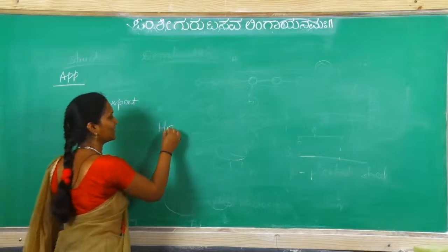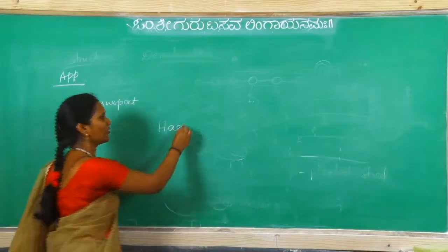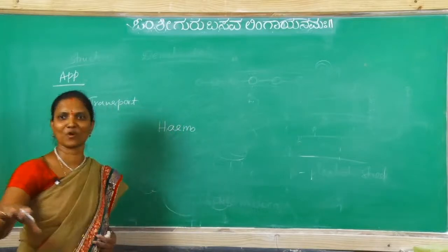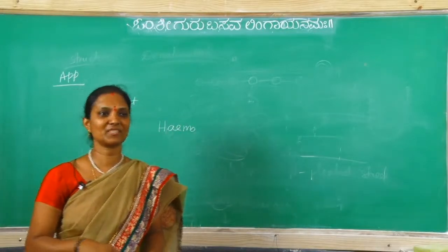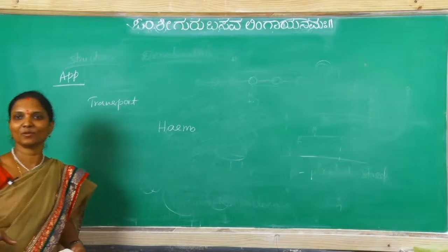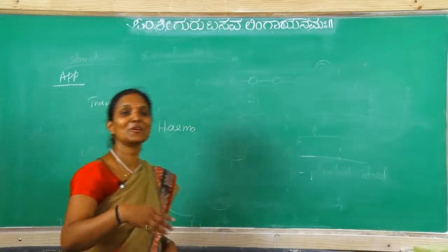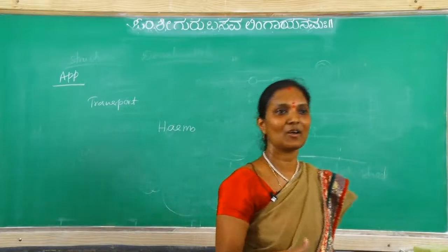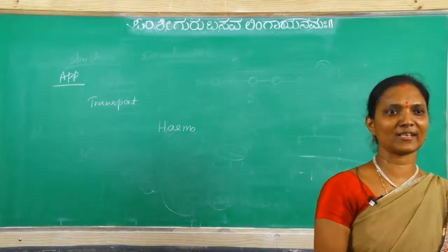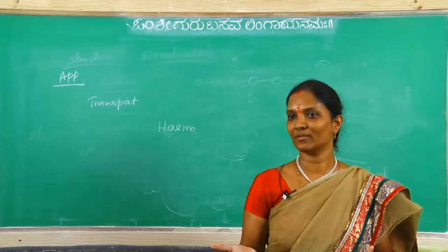Hemoglobin is a well-known transport agent - we have been learning about it since about 7th or 8th standard. Hemoglobin carries oxygen and carbon dioxide from body parts to somewhere.